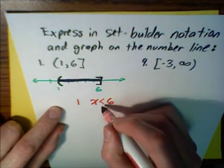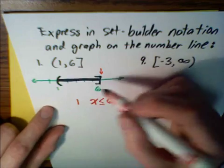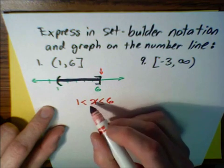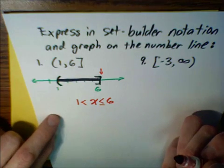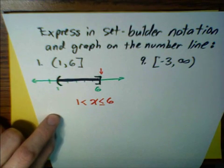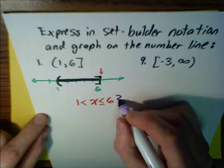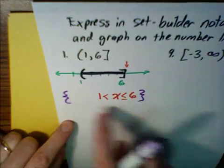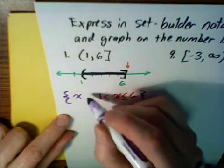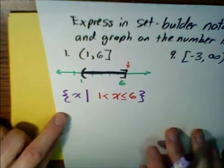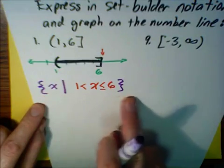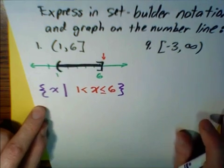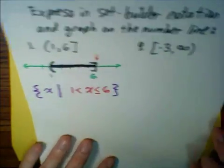We want x to be less than or equal to 6 because of the bracket — we are including that end point. But we don't want to include 1, so we want x to be greater than 1 with no equal to sign. The set builder notation has a few other details: to make it a set, we use curly braces, and the set builder notation usually has the variable and a vertical line. This is pronounced 'the set of all values x such that 1 is less than x and x is less than or equal to 6.'